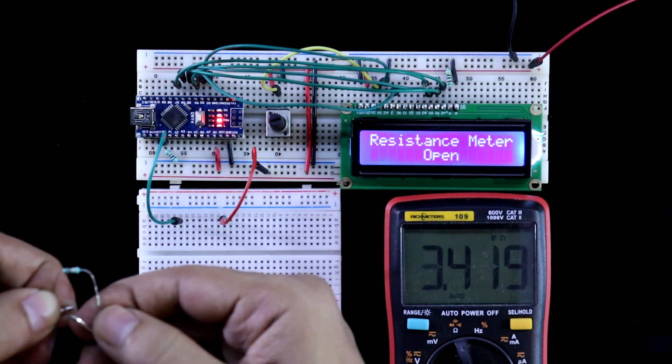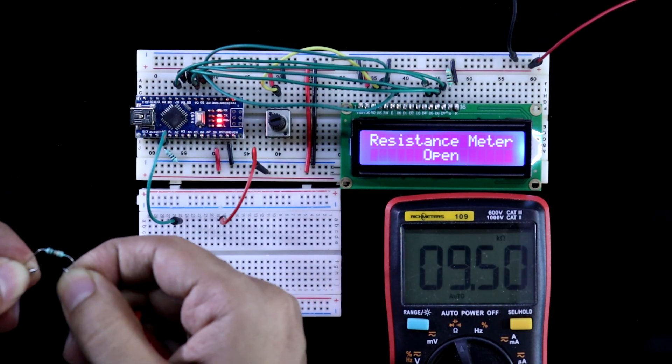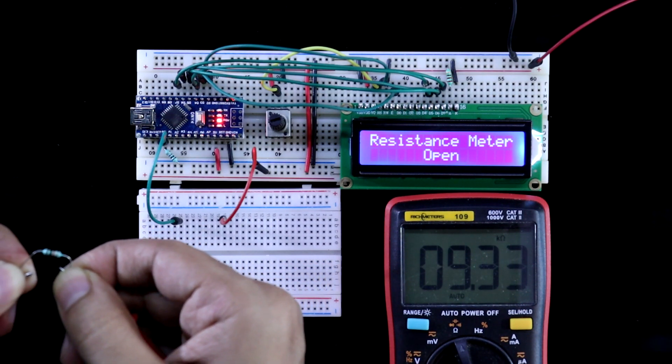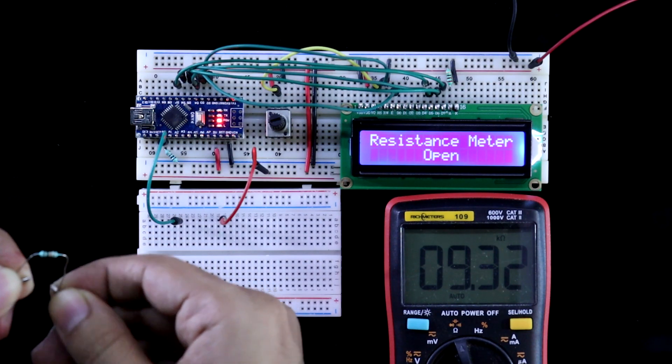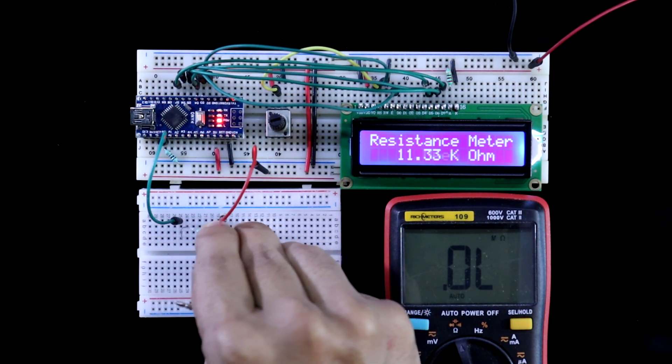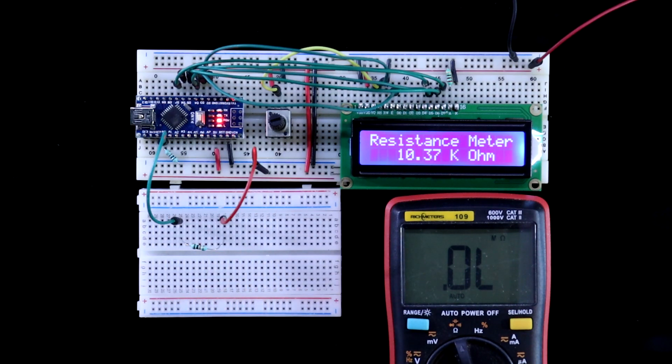Measuring 10 kilo ohms resistor. 9.32 kilo ohms. 10.73. It is also under 5% accuracy. By saying 5% means it is plus minus 5%.